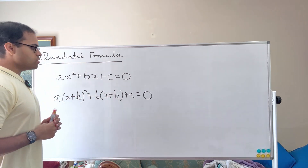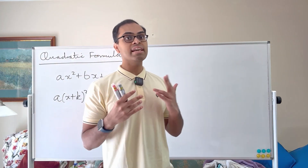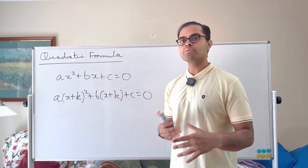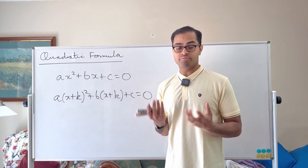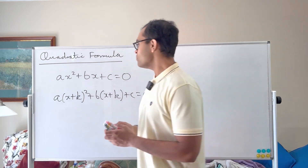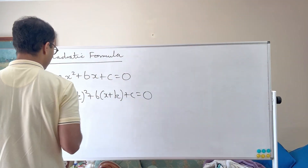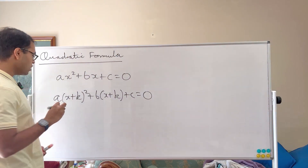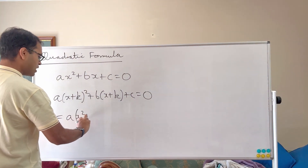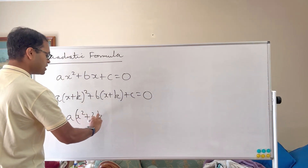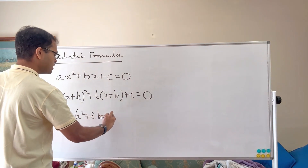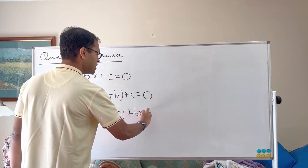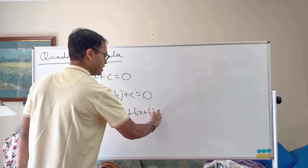What we're going to do is expand this out. We haven't yet said what k is — k is some new variable we're introducing. We're going to expand out the whole thing, and we're going to get ax² + 2kx (using the binomial theorem) + k² + bx + bk + c.